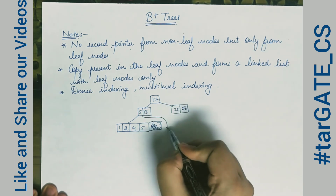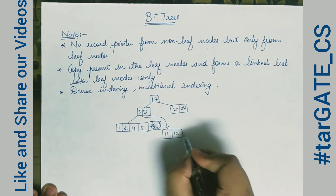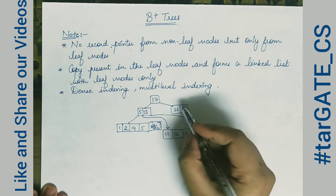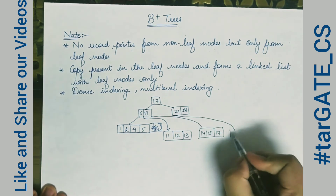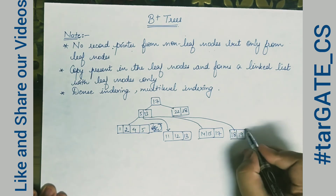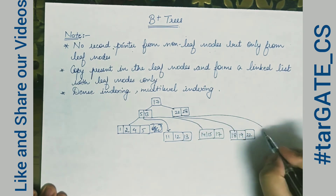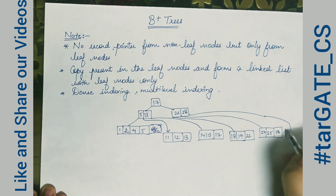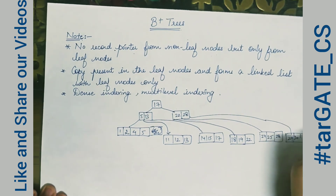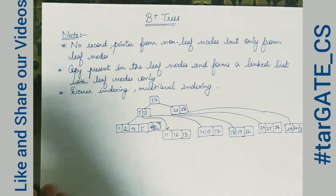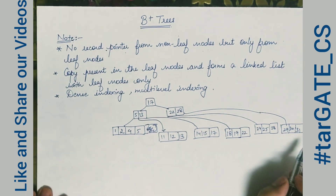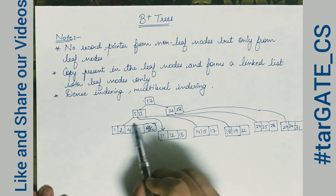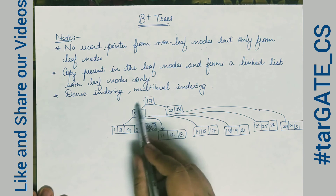In the B+ tree based on our earlier example, the leaf nodes contain all elements: 1, 2, 4, 5, 11, 12, 13, 14, 15, 17, 18, 19, 22, 24, 25, 28, 29, 30, 31. A copy of every element from the root and internal nodes is also present in the leaf nodes. The internal structure still mirrors the B tree.